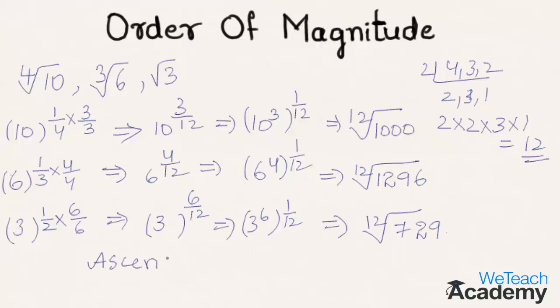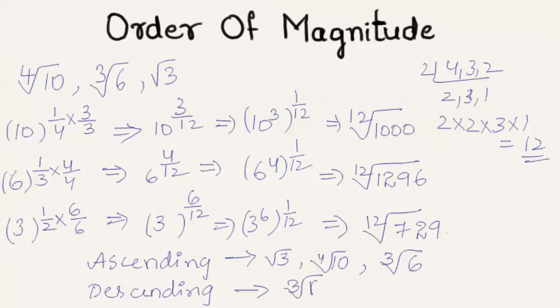Now let us write these values in ascending order of magnitude. By observing, we get 12th root of 729, then 12th root of 1000, that is fourth root of 10, and then cube root of 6. Similarly in descending order of magnitude, that is cube root of 6, then fourth root of 10, and then square root of 3.